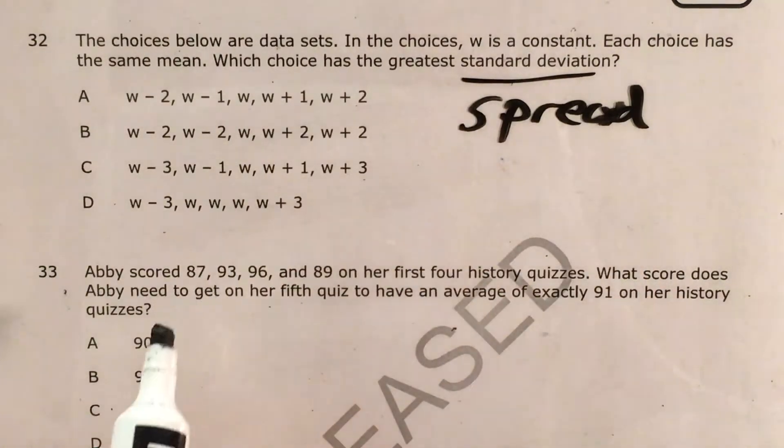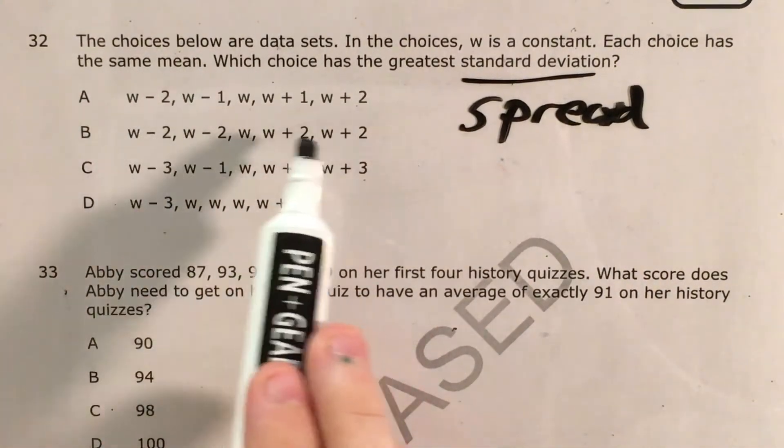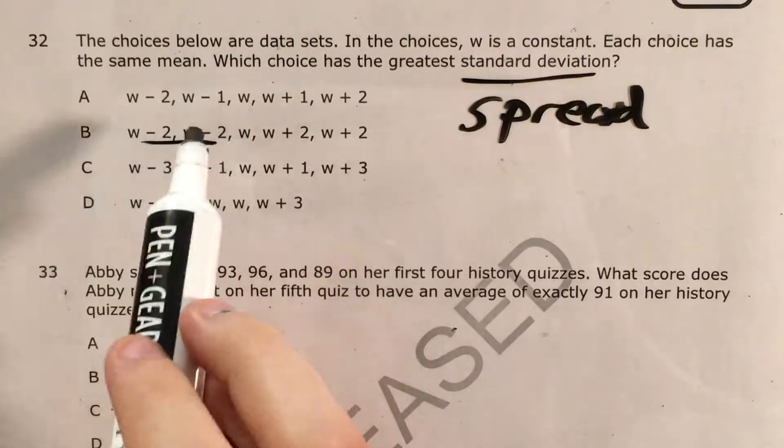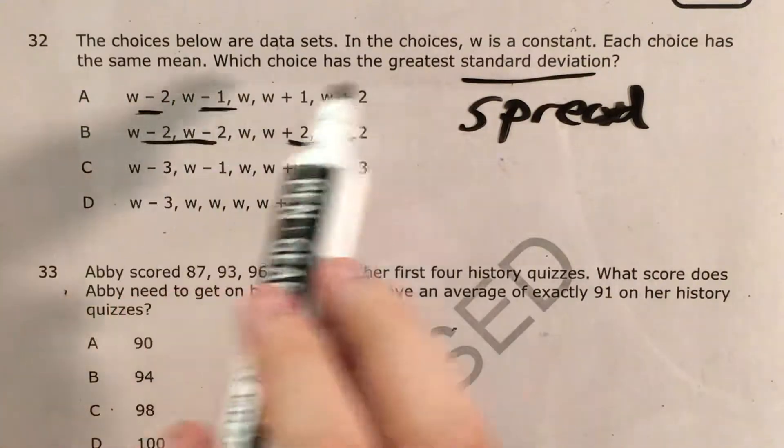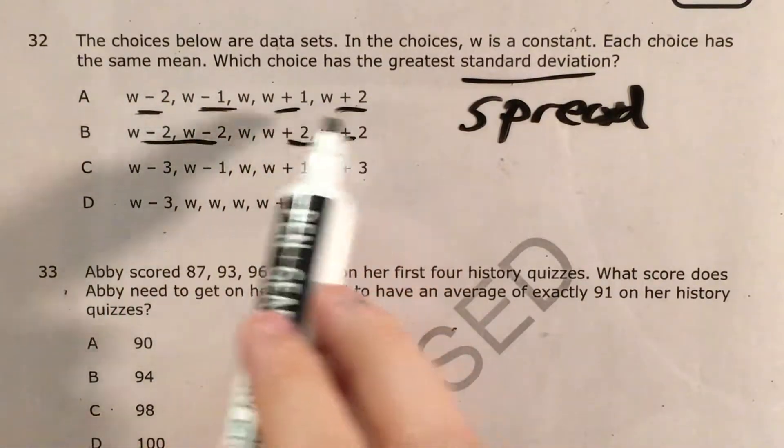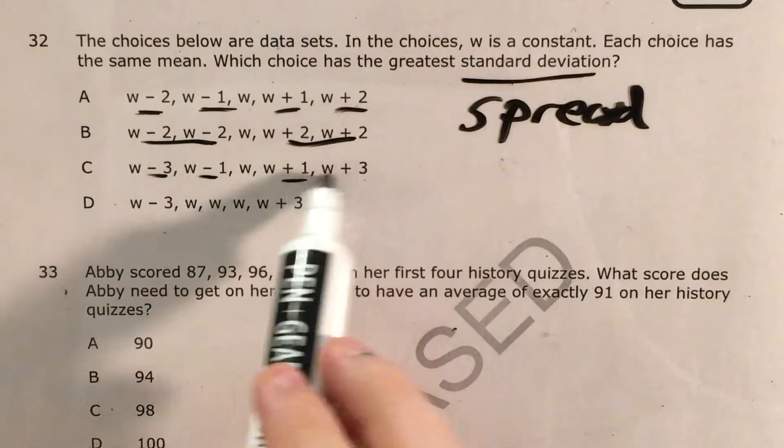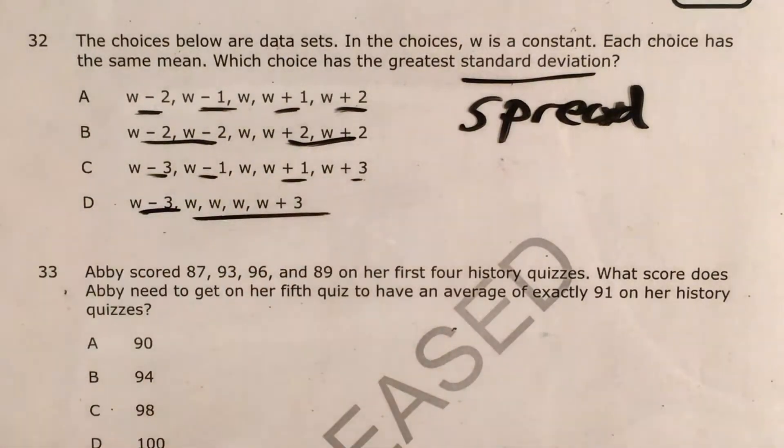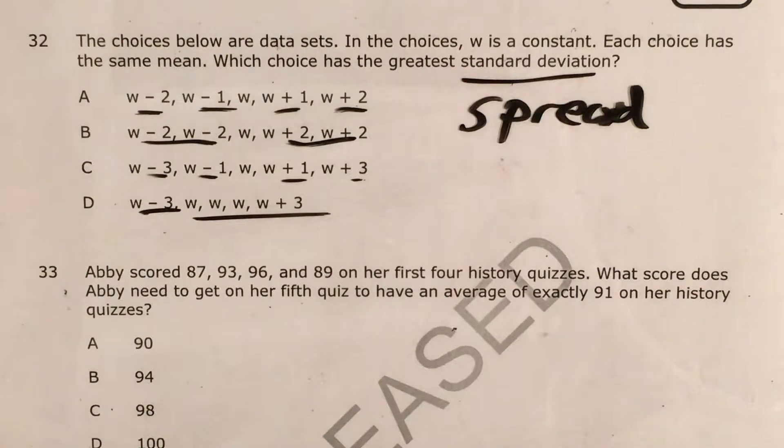If I had to guess, I'd say that choice B is more spread out than choice A because we have two minus 2s and two plus 2s as opposed to a minus 2 and a minus 1 and a plus 2 and a plus 1. So in general, we got some data that's further out. Choice C and choice D look pretty good because we have minus 3s and plus 3s. But honestly, just based on all this, I'm not 100% sure.